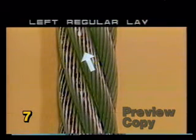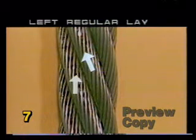Left regular lay means that if you hold the wire rope in front of you, the strands or the bigger wires spiral around to the left, and the smaller wires making up the strands spiral in the opposite direction, or to the right.